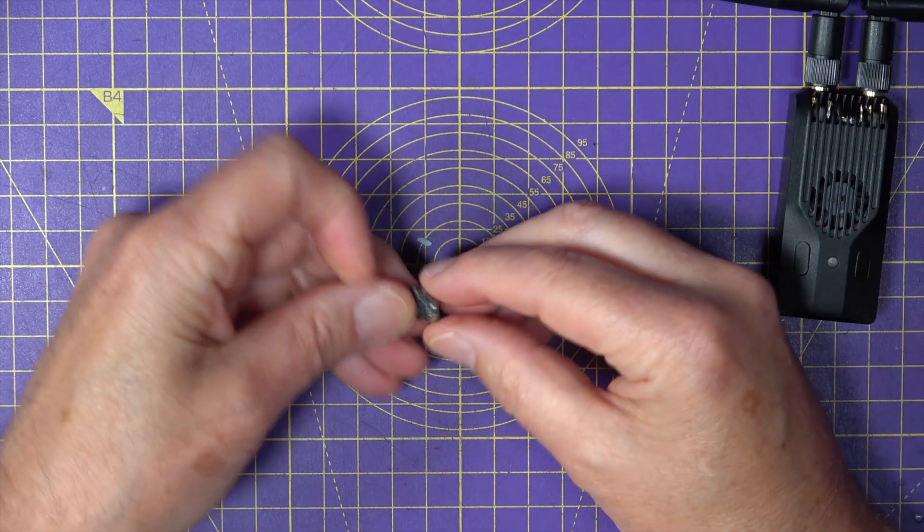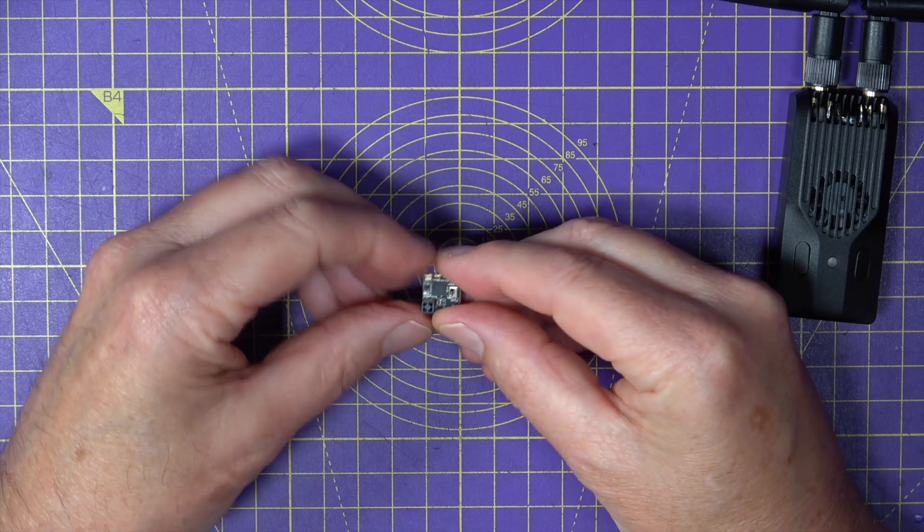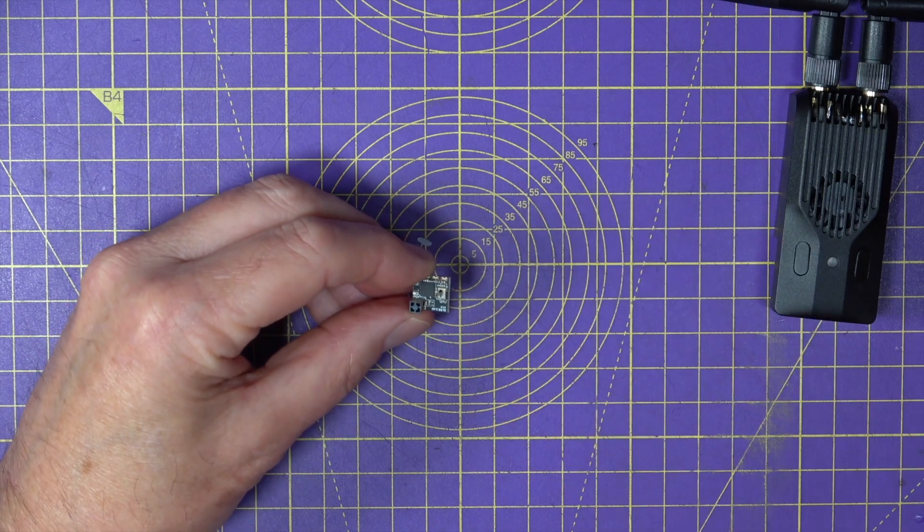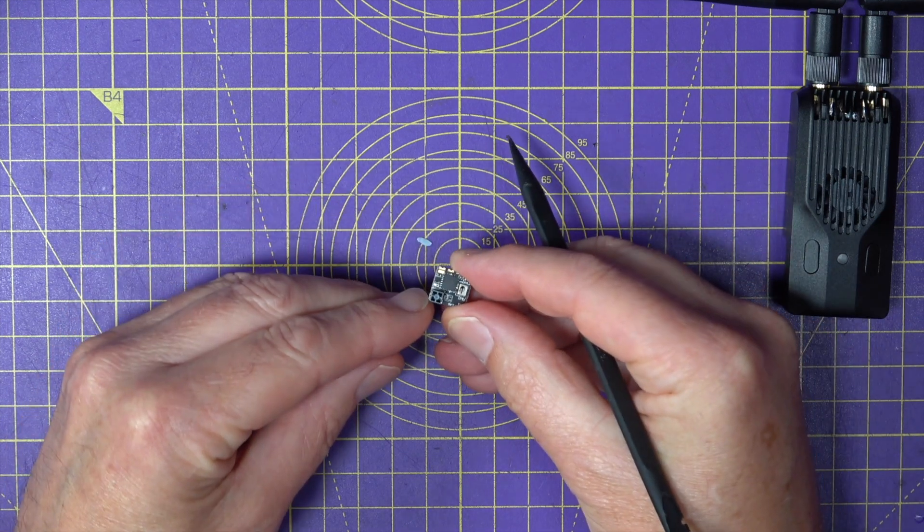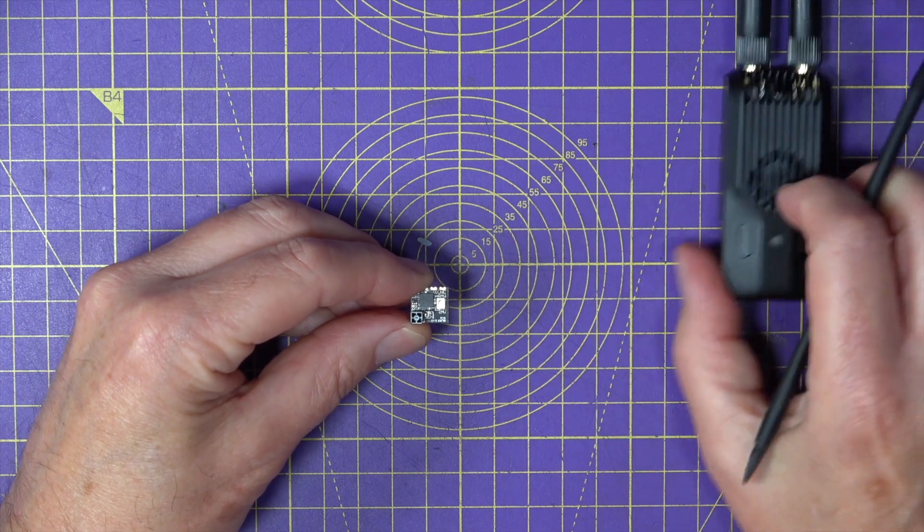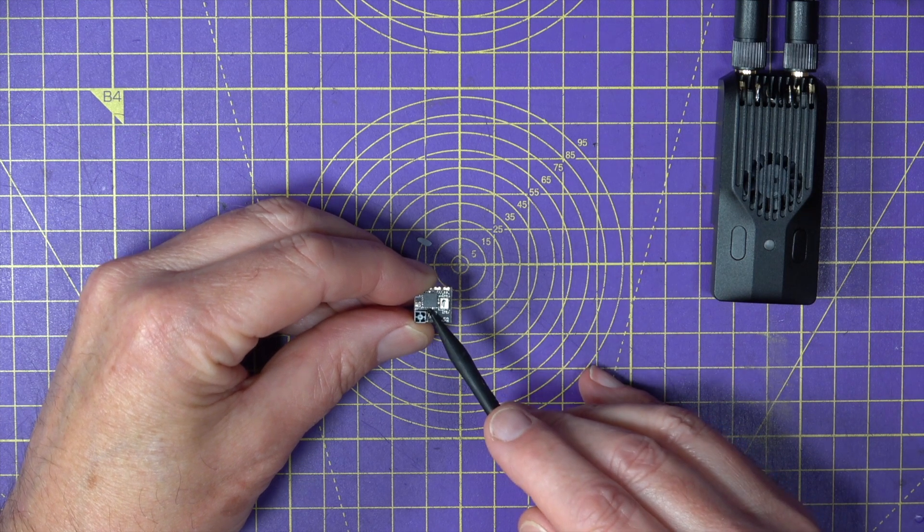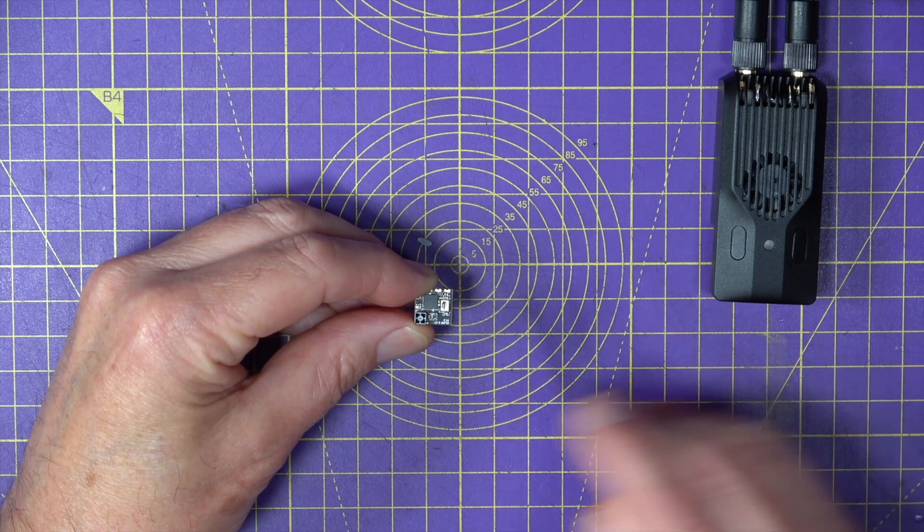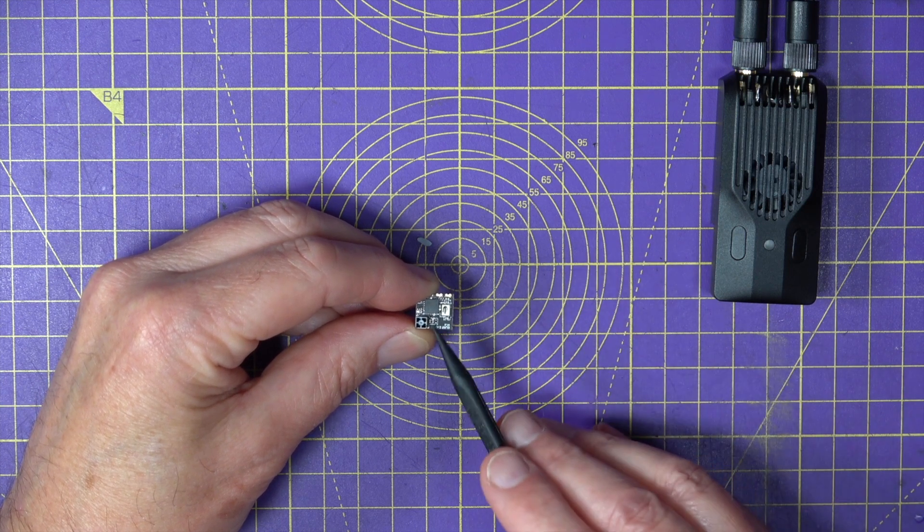So if you've got a single ELRS receiver like this BetaFPV ELRS Lite, you've got a single receiver circuit and a single antenna. In this case, it's a little ceramic antenna. So when a packet is sent from your transmitter, it only has one chance to receive it. So if there's any interference along the way or the distance is just too much, it won't be received.